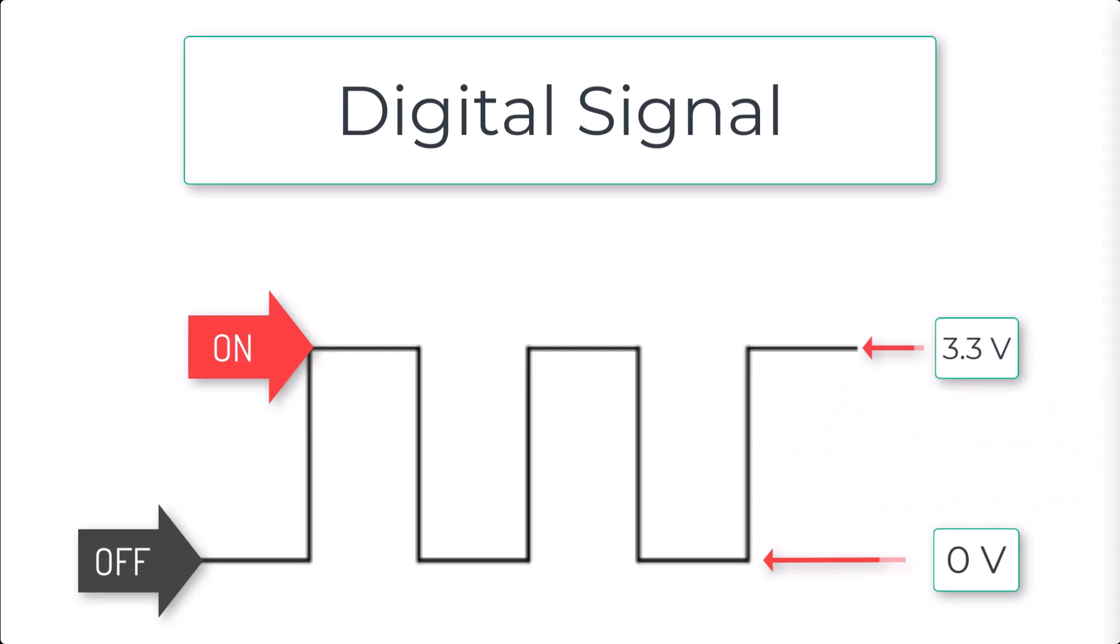Digital signals are perfect for systems that need precise control, like computers, because they're easy to interpret. Is the signal on or off? Simple.